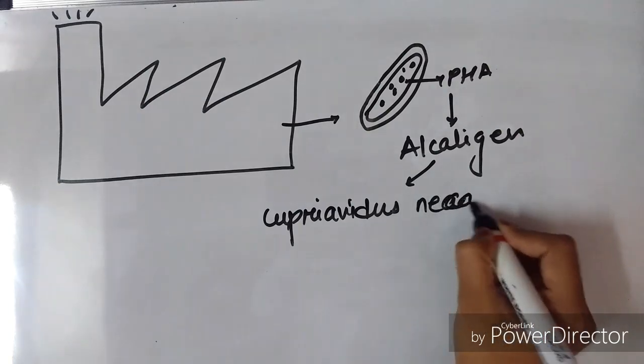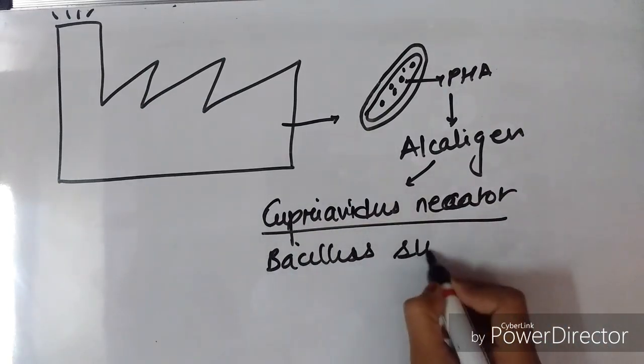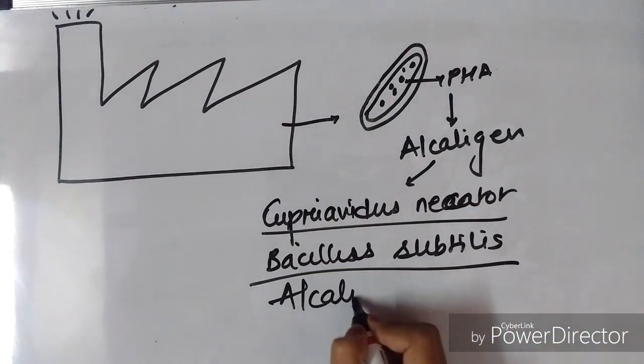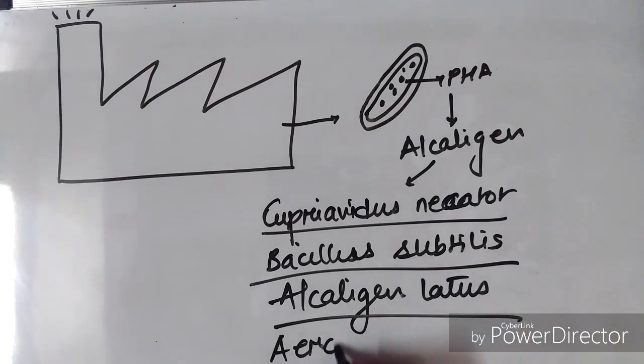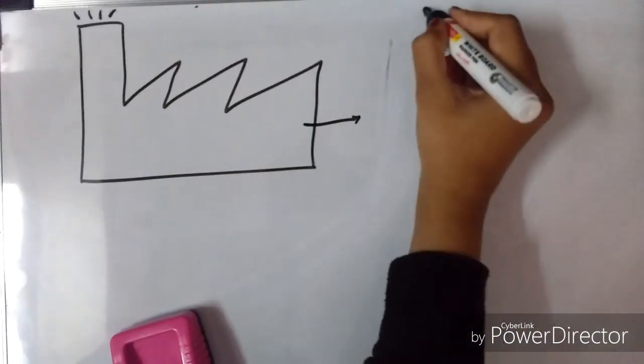The bacteria used for PHA production are Cupriavidus necator, Bacillus subtilis, Alcaligenes latus, and Azotobacter chroococcum.